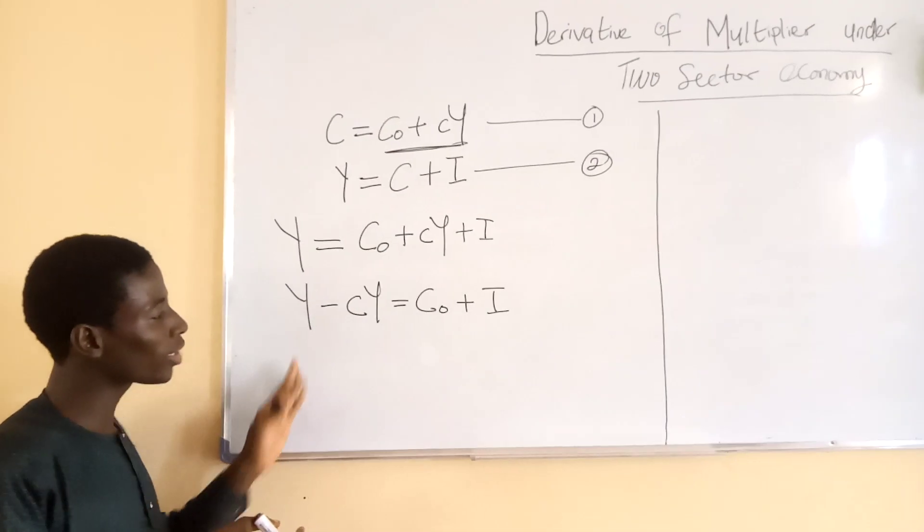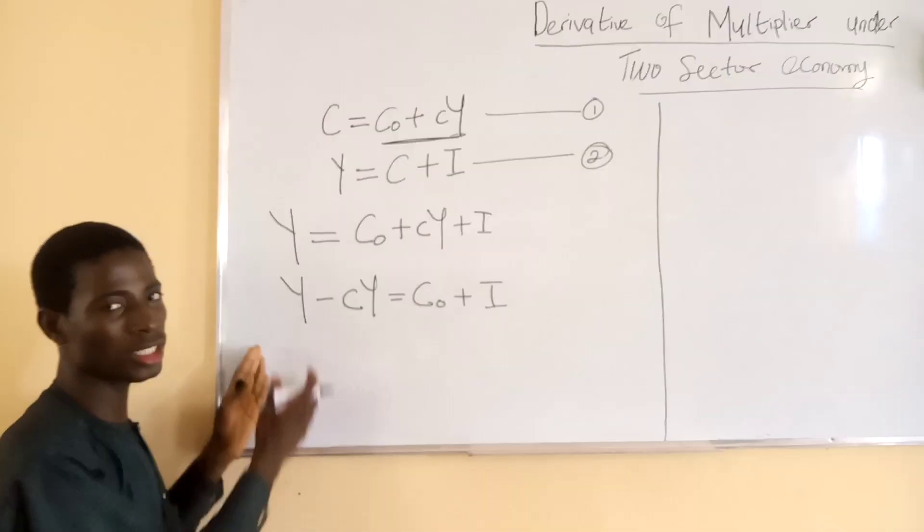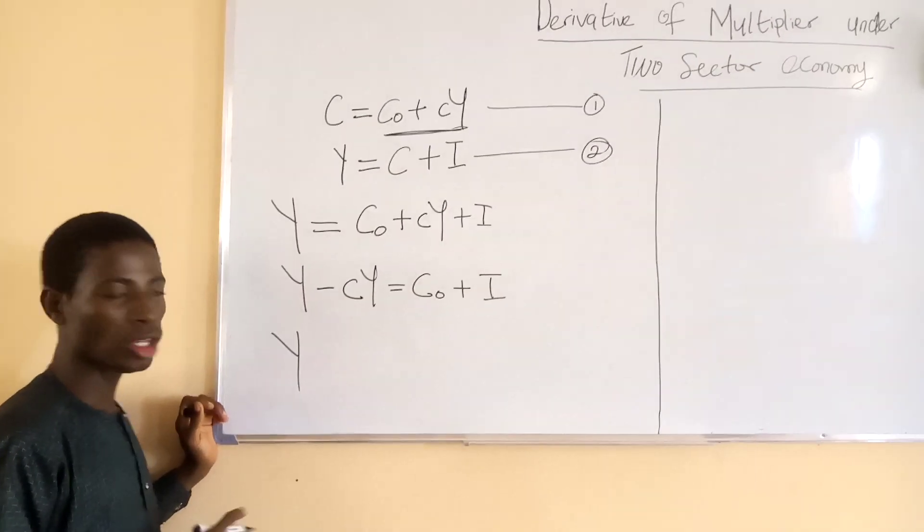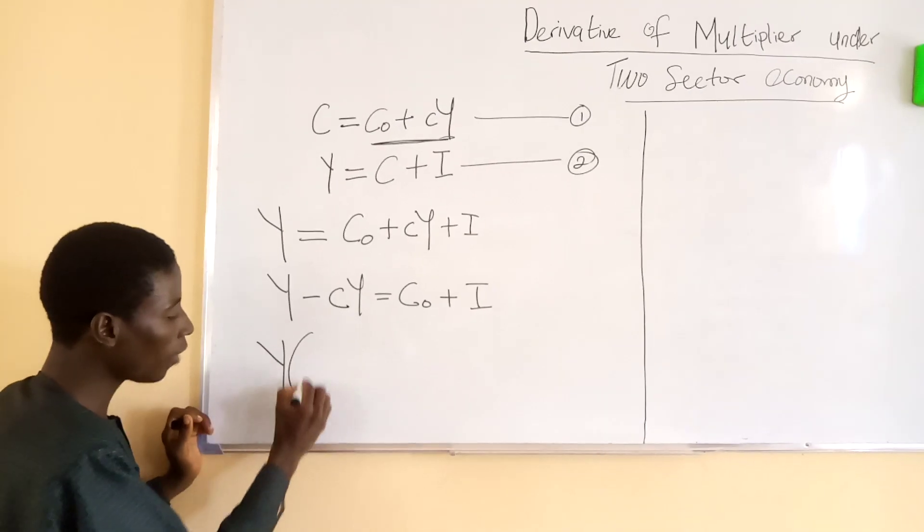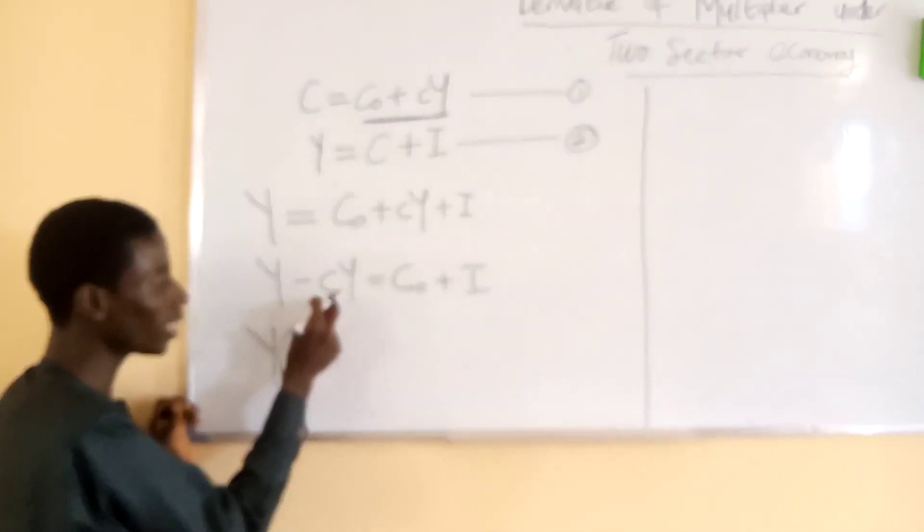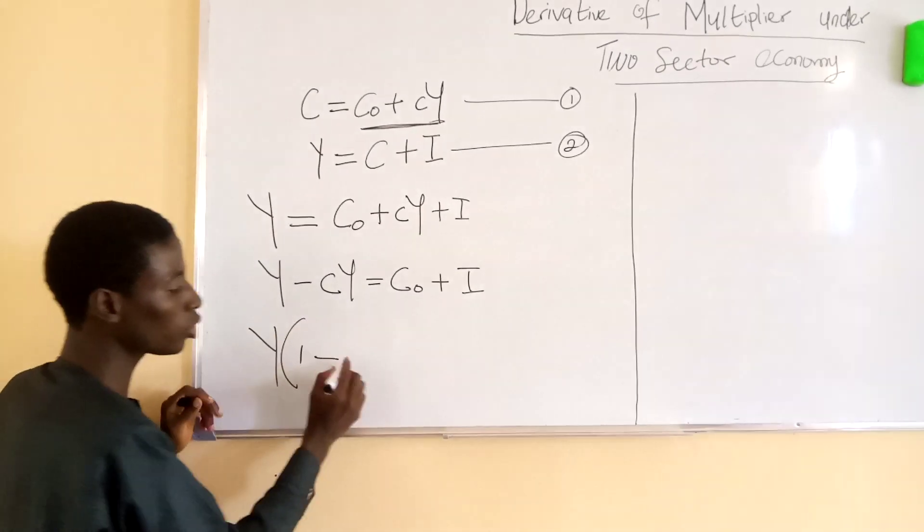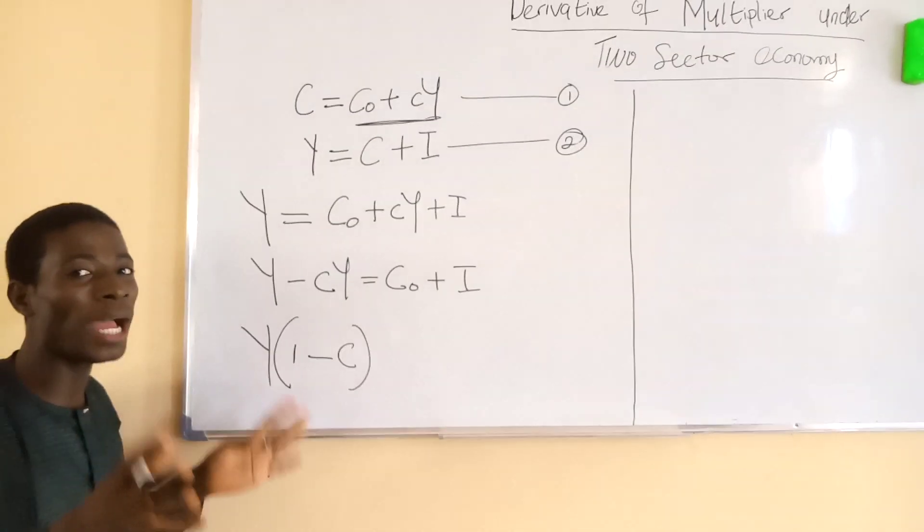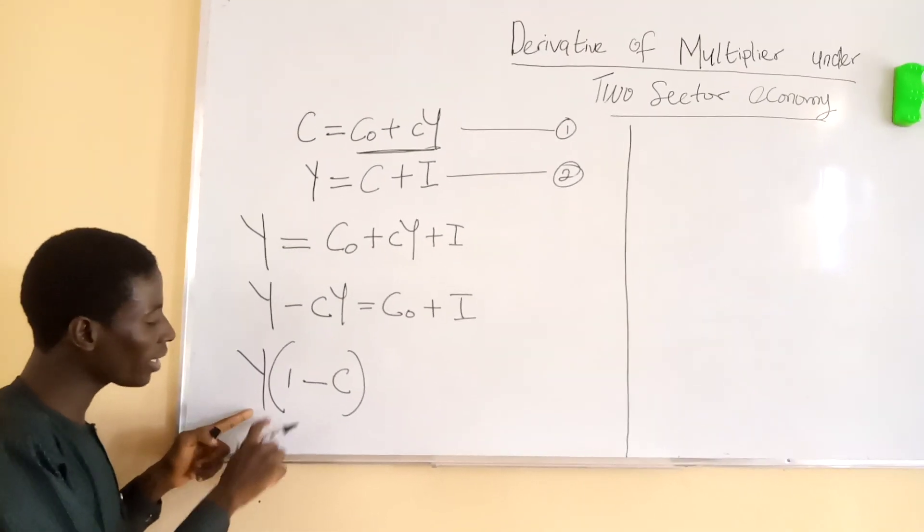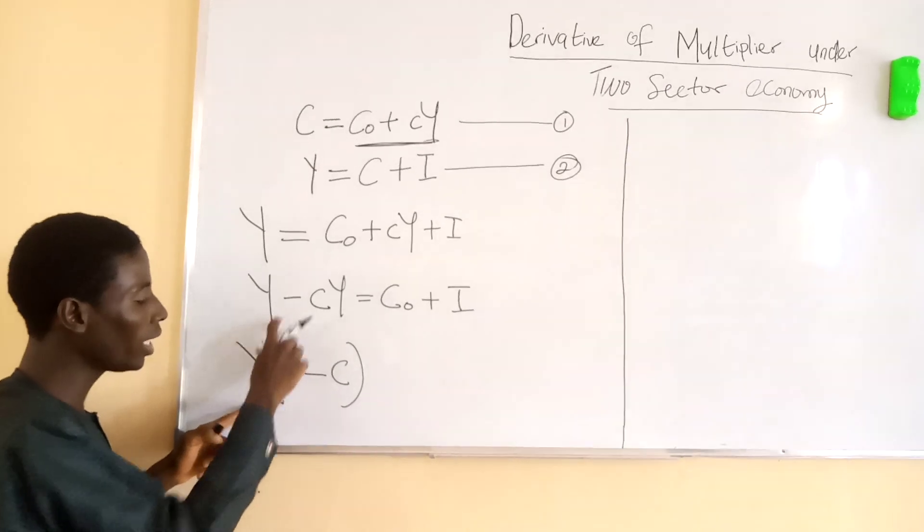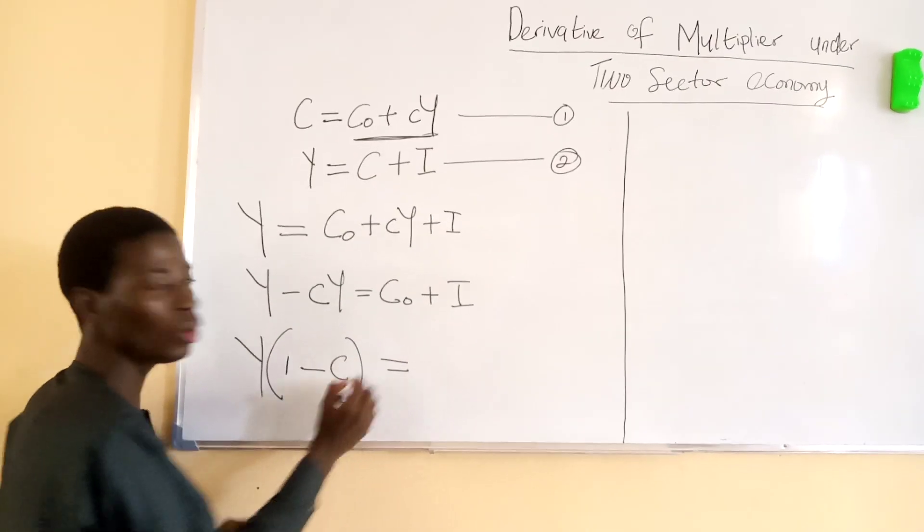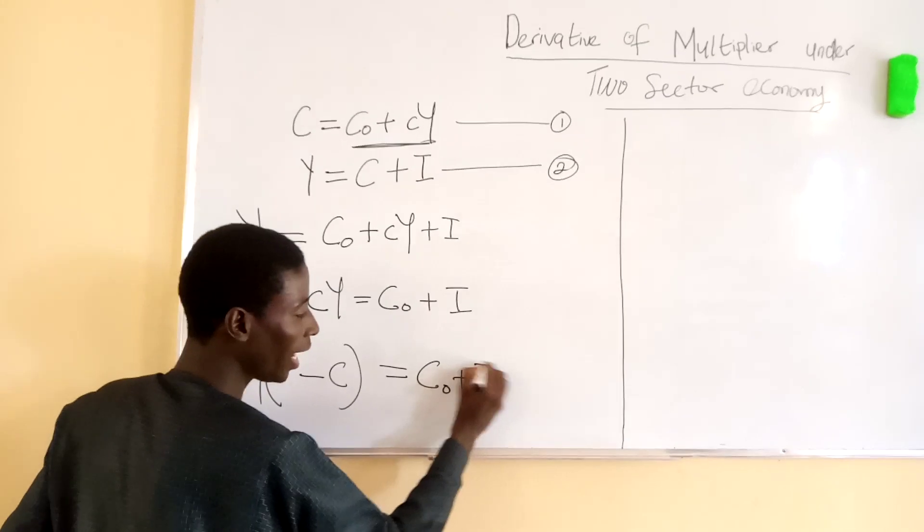By mere analysis, we can have a simple factorization for this side where we have two Y terms. We can bring one outside: Y divided by Y gives us one, and cY divided by Y gives us c. In normal application, this simply means we can expand by saying one times Y gives us Y, and Y multiplied by c gives us cY. So Y equals C sub zero plus I.